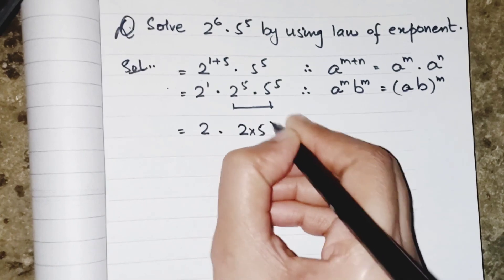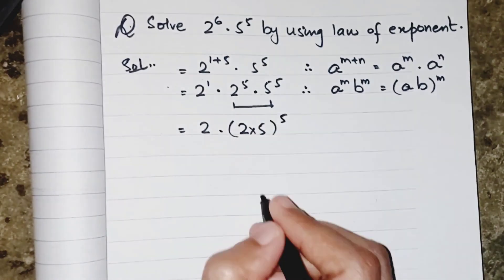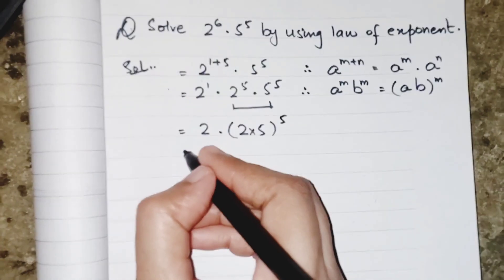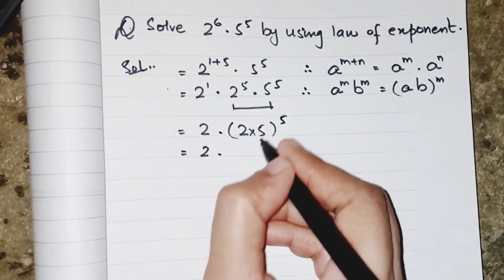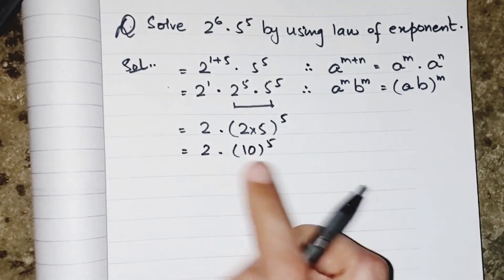So we are doing the same thing: 2 multiplied by 5 and writing the 5 as common. 2 times 2 times 5, which is 10 power 5.